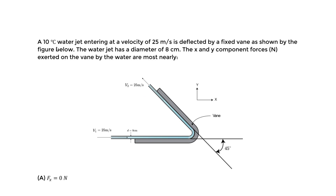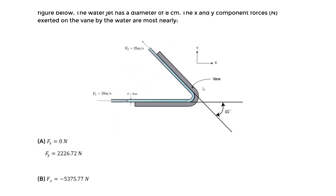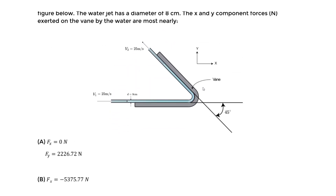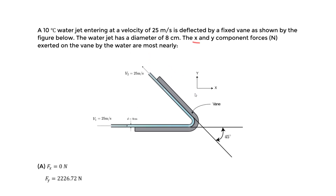We enter at 25 meters per second and exit at 25 as well. The water jet has a diameter of 8 centimeters, and we need to find the x and y component forces in newtons exerted on the vane by the water. The approach is to use the impulse momentum principle to find those component forces, since the handbook equation gives only the resultant force in a given direction.